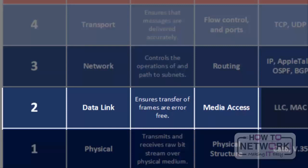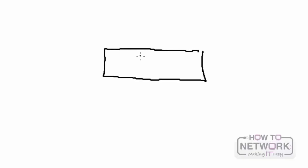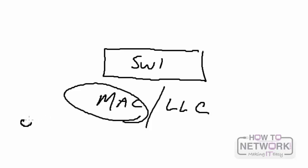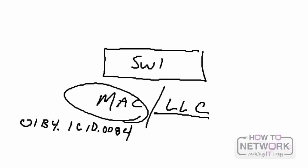The data link layer is where data packets are encoded and decoded into bits. It's the intermediary between the network and physical layer. It furnishes transmission protocol knowledge and manages errors at the physical layer, including flow control and frame synchronization. Switches normally participate at layer 2. Layer 2 is broken into two sections: the MAC sublayer and the LLC sublayer. The MAC sublayer is involved when you pull up MAC addresses on a switch for troubleshooting. The LLC layer allows communication between layers 2, 3, and 1.